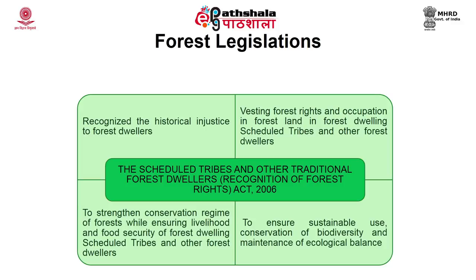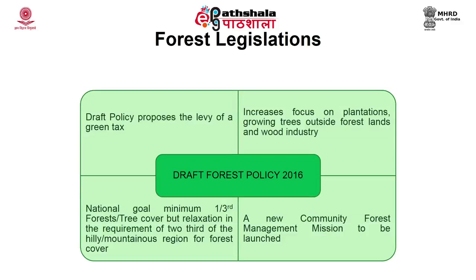The 2016 draft is still under consideration and has not been finalized. It is consistent with the previous policy regarding extending forest cover to one-third of the geographical area, but it does not talk about maintaining two-thirds area under forest in hills and mountains. The 2016 draft provides for a Community Forest Management Mission, under which management of all forests should be brought, with involvement of the Gram Sabha in managing these resources. The policy also models revving off green tax and aims at growing trees on lands outside forests for the wood industry. Only time will tell what changes are made in the final policy.